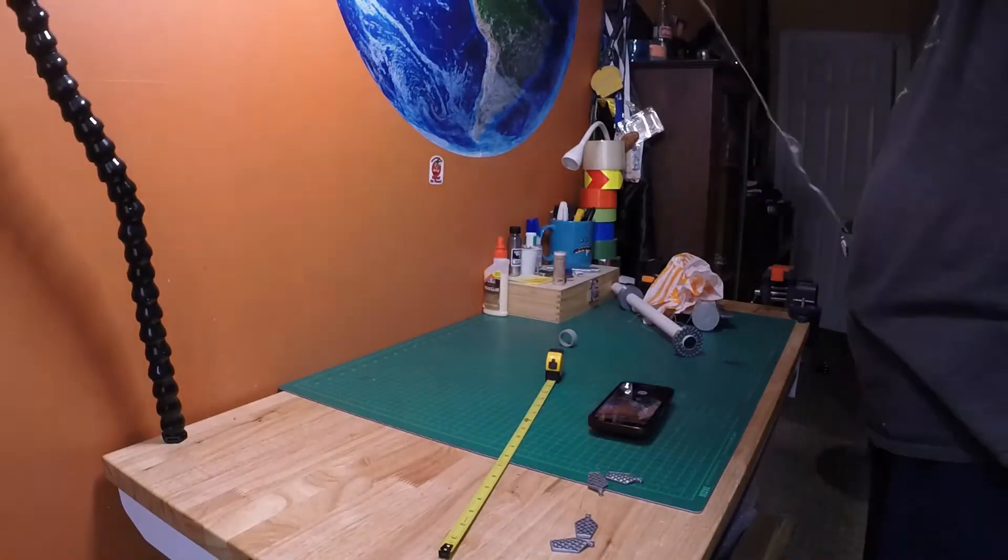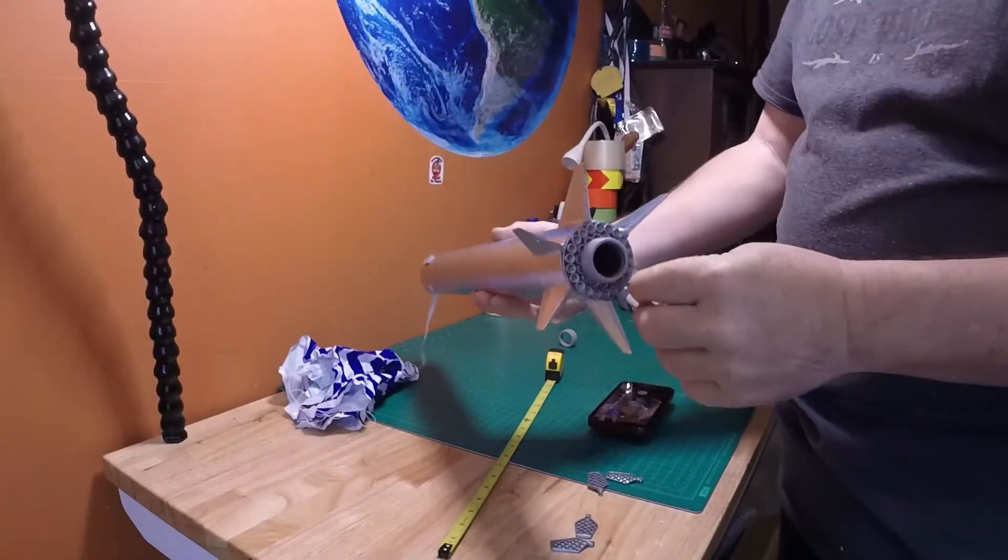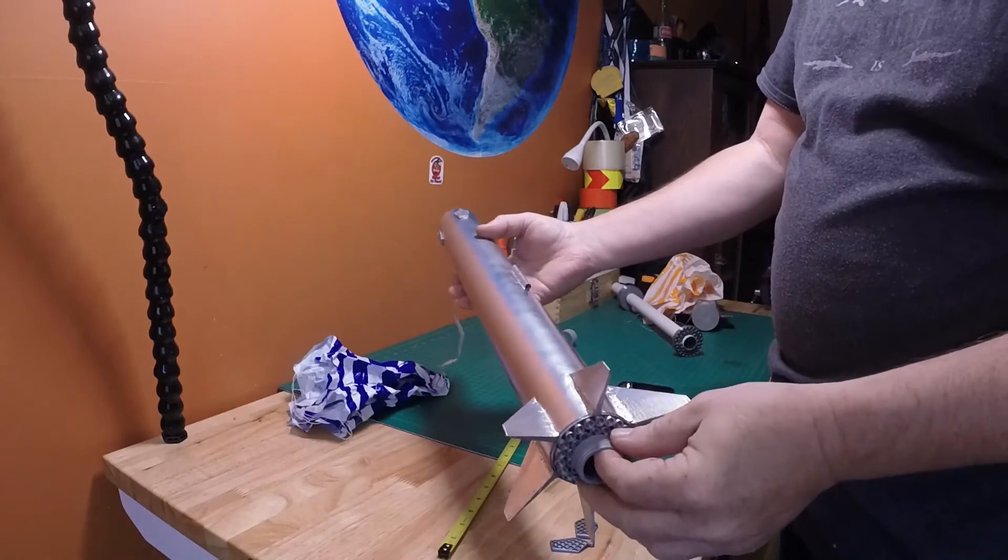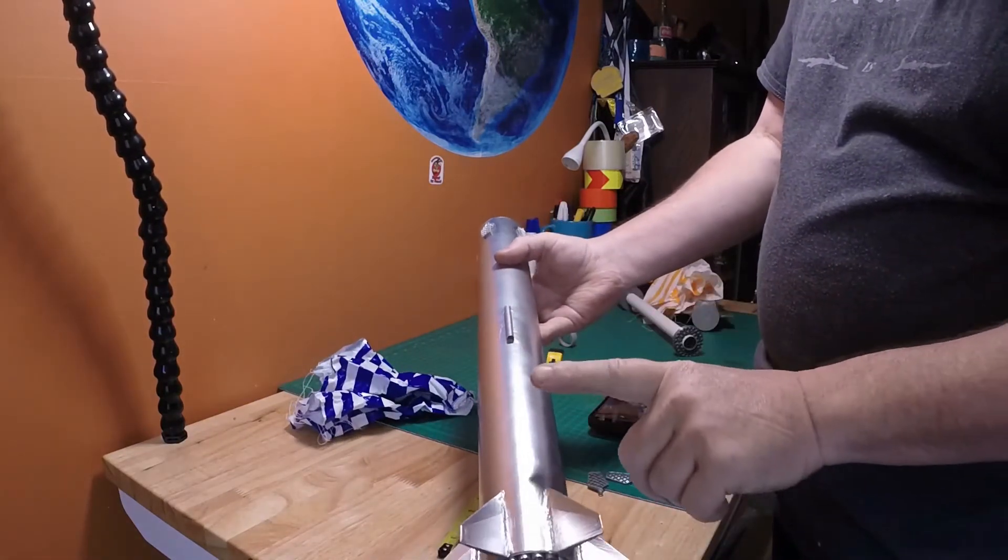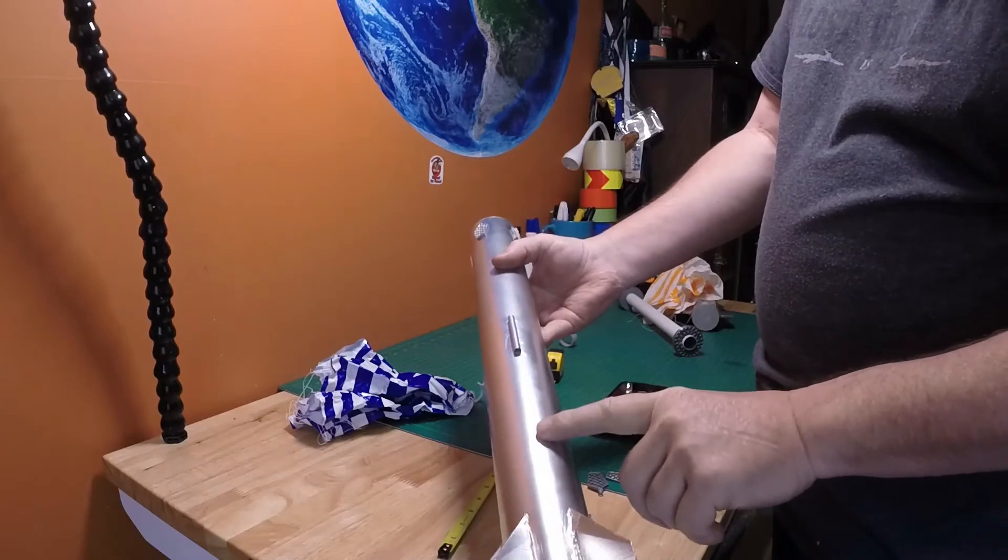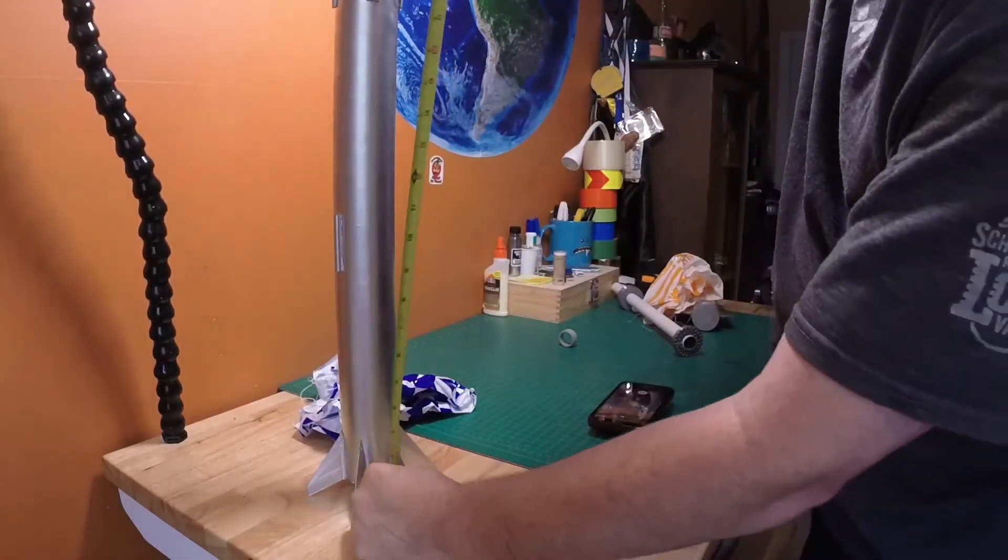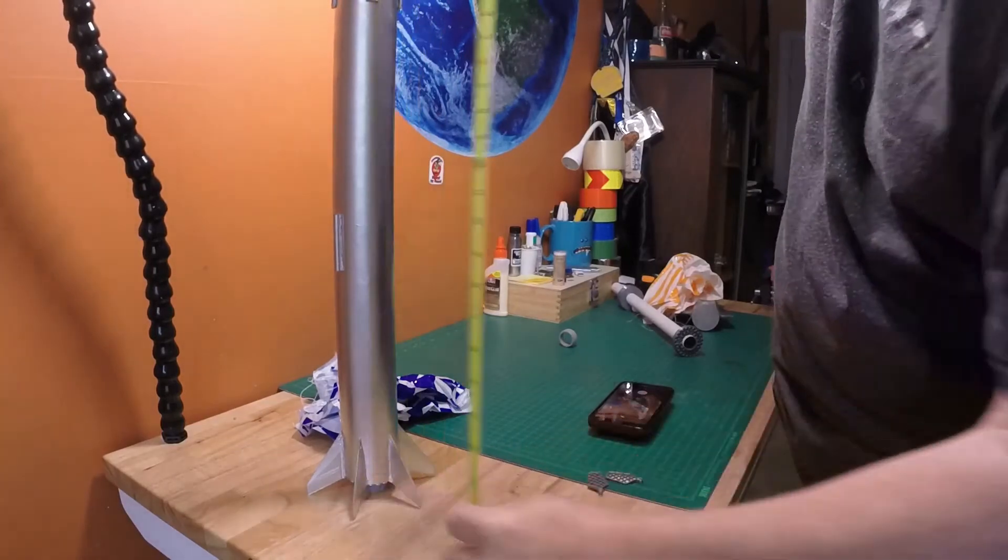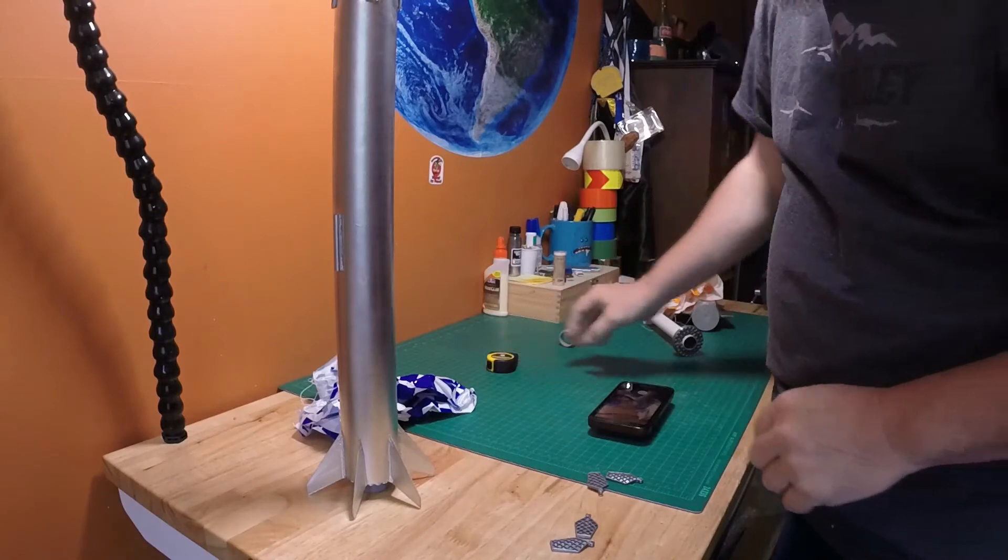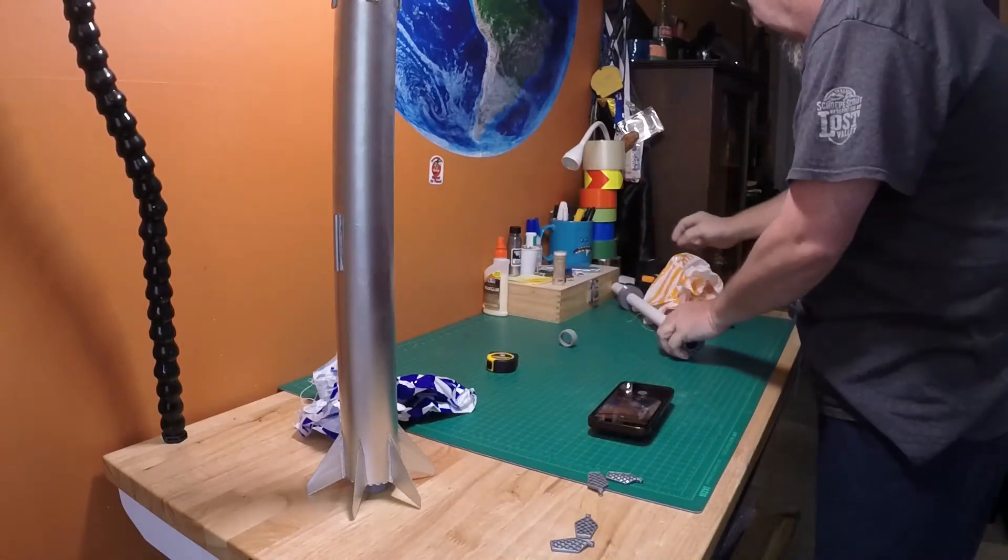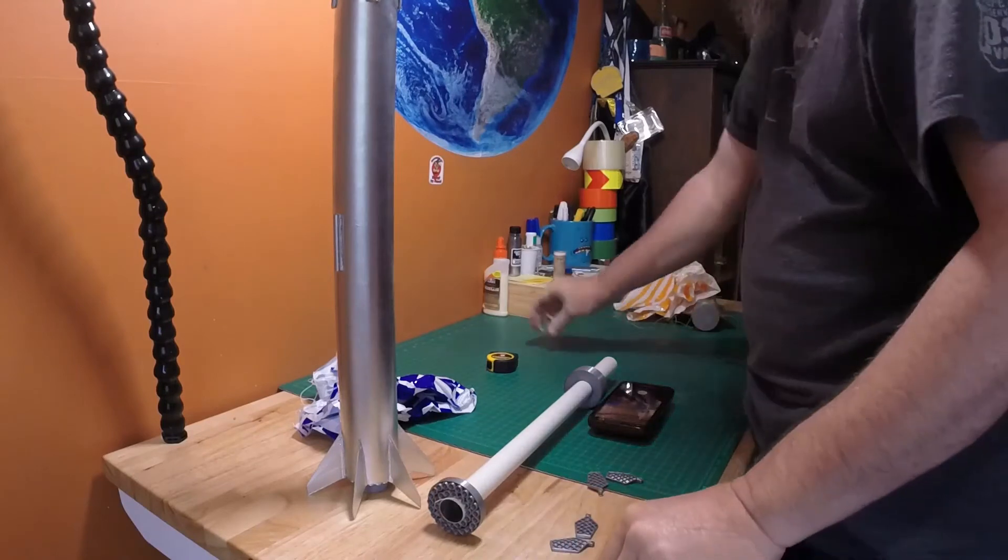So things that are not included in the kit are the launch lug, the BT-70 body tube that needs to be in the ballpark of about 20 inches tall, stuffer tube inside needs to be 14 inches long. And that's pretty much the parts you need.